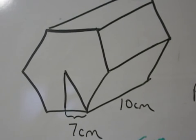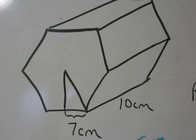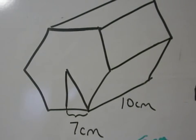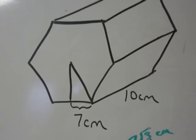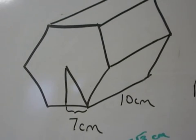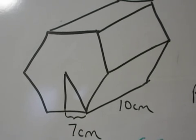This is a hexagonal prism. We want to find the lateral area and the surface area. I've told you that half of the length of a side is seven centimeters and that the height of the overall prism is ten centimeters.